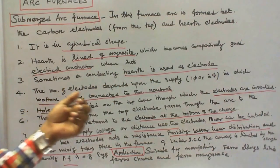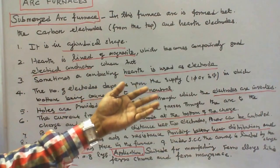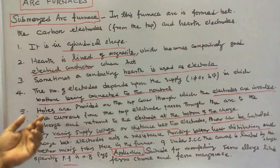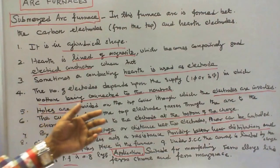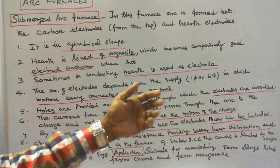Sometimes a conducting earth is used as electrode. The number of electrodes depends upon the supply: single phase or three phase, in which bottom being connected to the neutral. Holes are provided on the top cover through which the electrodes are inserted.